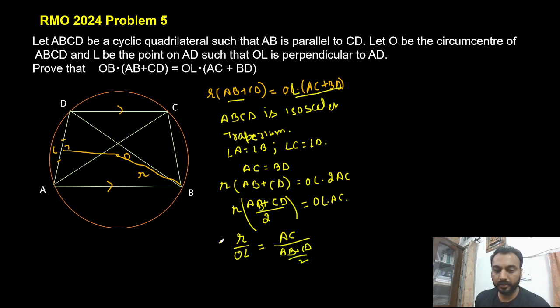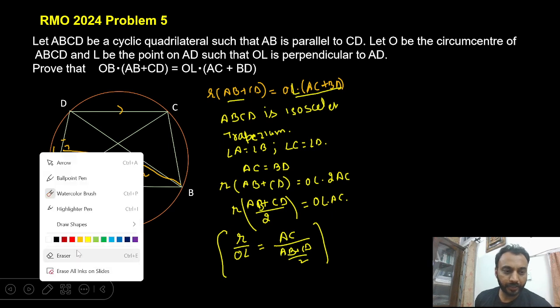So it looks like we have to prove two triangles similar like R/OL is equal to AC/(AB + CD)/2. So we can try a triangle in which we have R and OL and in which AC and (AB + CD)/2. Now we know (AB + CD)/2 is a length of a median line.